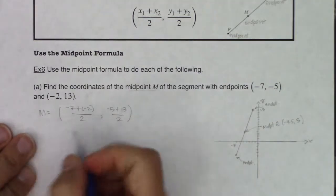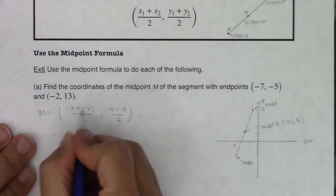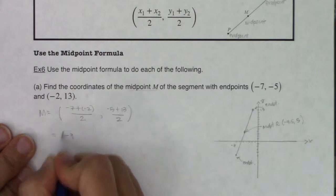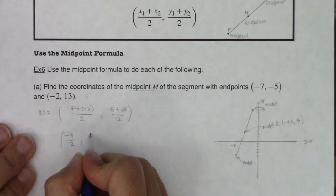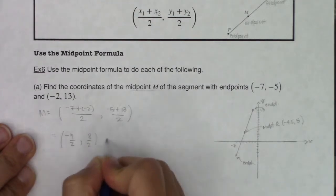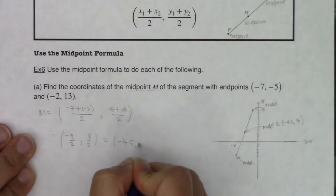Let's see what we're getting. Negative 7 plus negative 2 is negative 9. 9 halves, negative 5 plus 13 is 8 over 2. So I believe the midpoint is negative 4.5, 4.